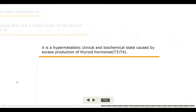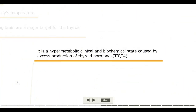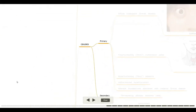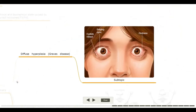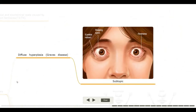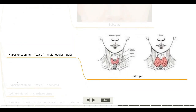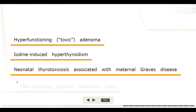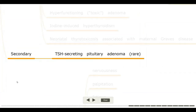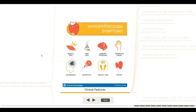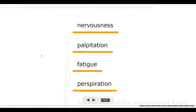Functional disorders: hyperthyroidism and hypothyroidism. Hyperthyroidism — thyrotoxicosis: it is a hypermetabolic clinical and biochemical state caused by excess production of thyroid hormones T3 and T4. Causes — primary: diffuse hyperplasia (Graves' disease), hyperfunctioning toxic multinodular goiter, and hyperfunctioning toxic adenoma. Secondary: TSH-secreting pituitary adenoma (rare).